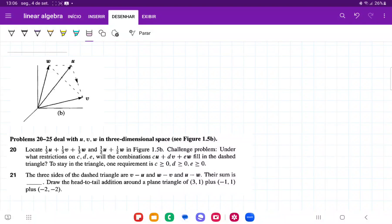So for number 21, we're going to have the three sides of the dashed triangle, so this triangle here that connects v, u, and w.